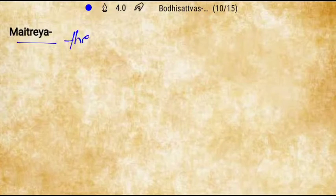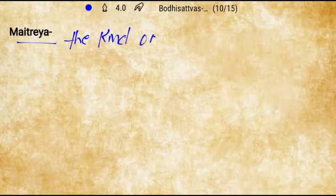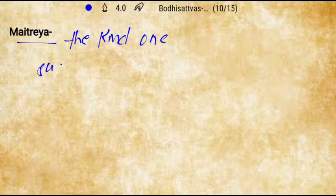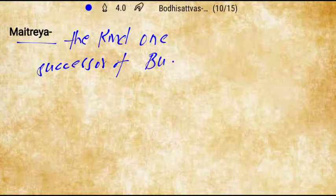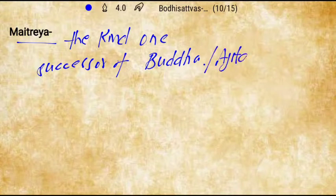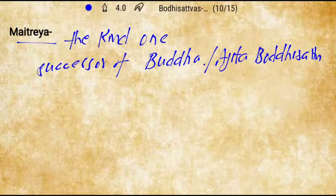Next is Maitreya, meaning 'the kind one.' Maitreya is considered to be the successor of Gautama Buddha. He is also known as Ajita Bodhisattva. He holds a water vessel in his left hand. His earliest mention is in the Digha Nikaya, which is part of the Pali Canon — an important literature under Buddhism.